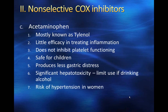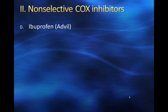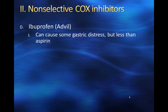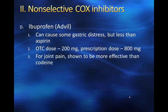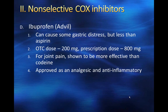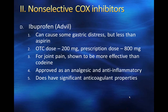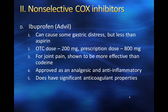There is a significant risk of hypertension from acetaminophen in women, so caution is warranted there. Our next non-selective COX inhibitor is ibuprofen, or Advil. Ibuprofen can cause some gastric distress, but less so than aspirin. The typical over-the-counter dose is 200 milligrams per pill, while the prescription dose is 800 milligrams, which is about its ceiling for effectiveness. For joint pain, ibuprofen has been shown to be more effective even than codeine in relieving joint pain because it treats the inflammation. It is approved as an analgesic and anti-inflammatory and does have some significant anticoagulant properties — something to watch out for, as you can end up with significant bleeding.